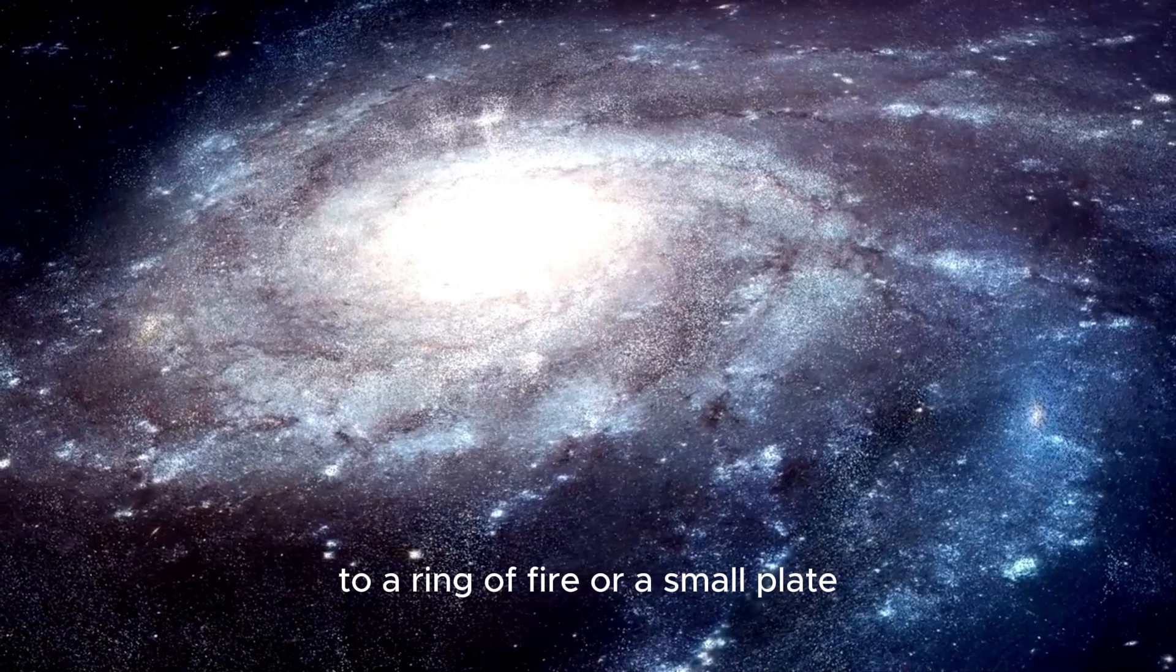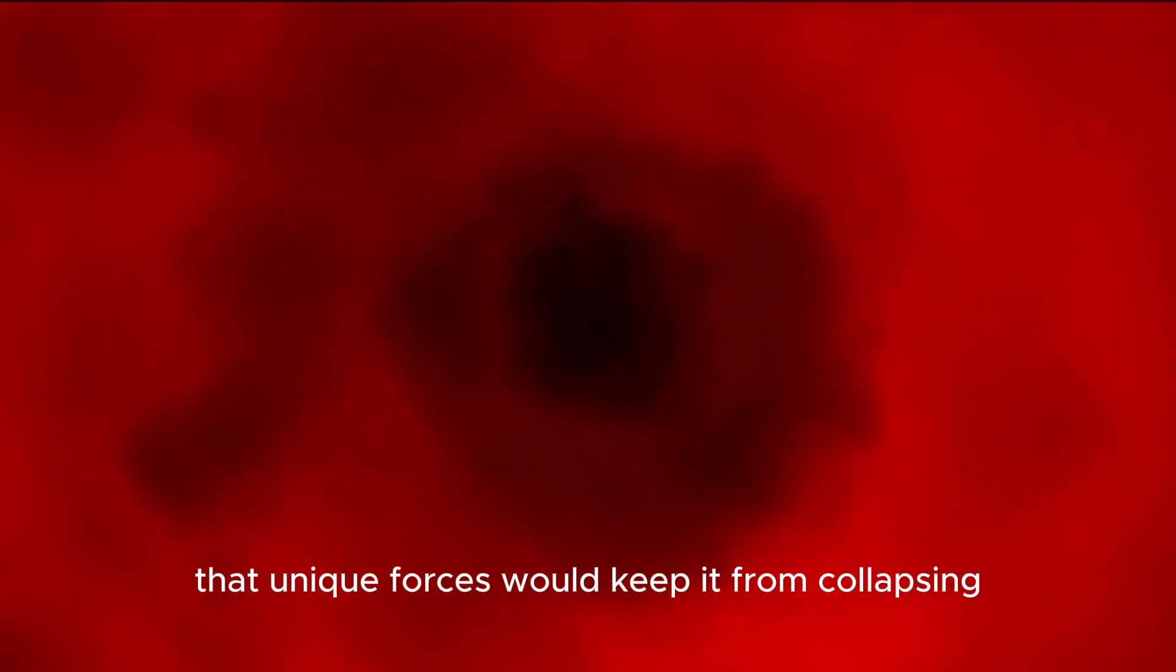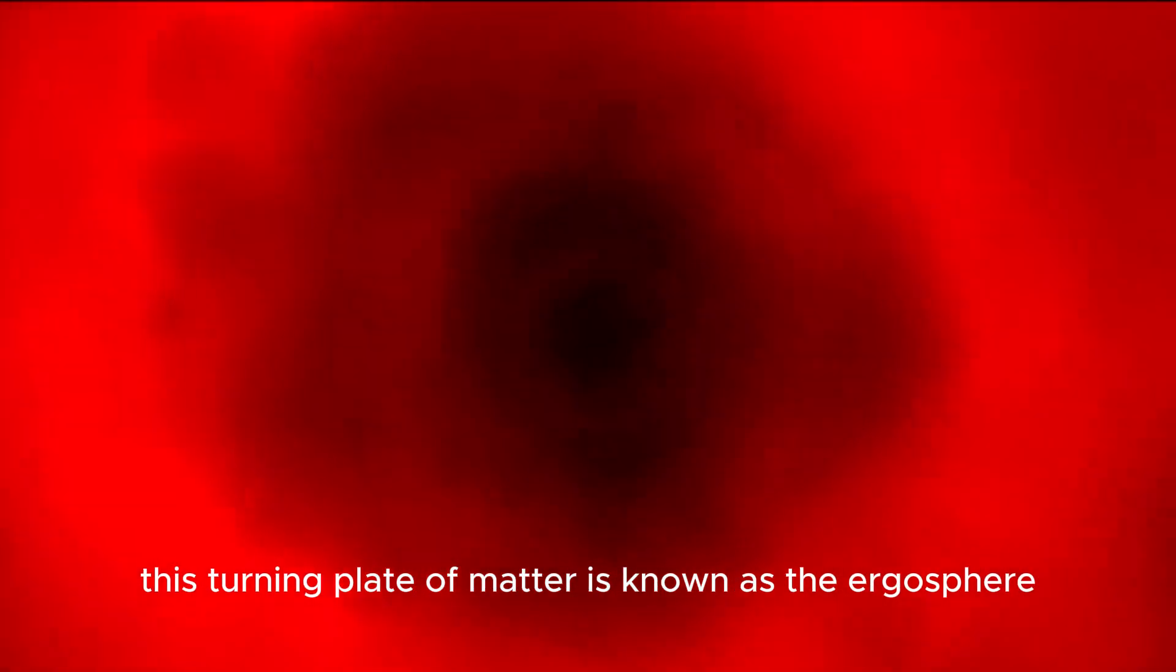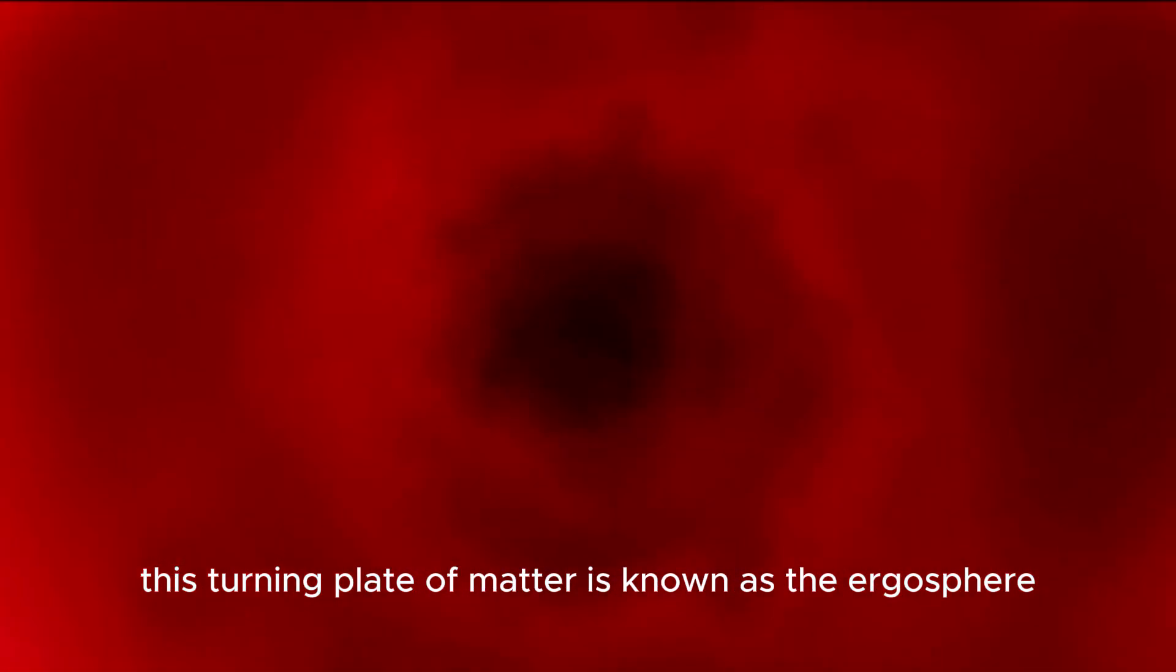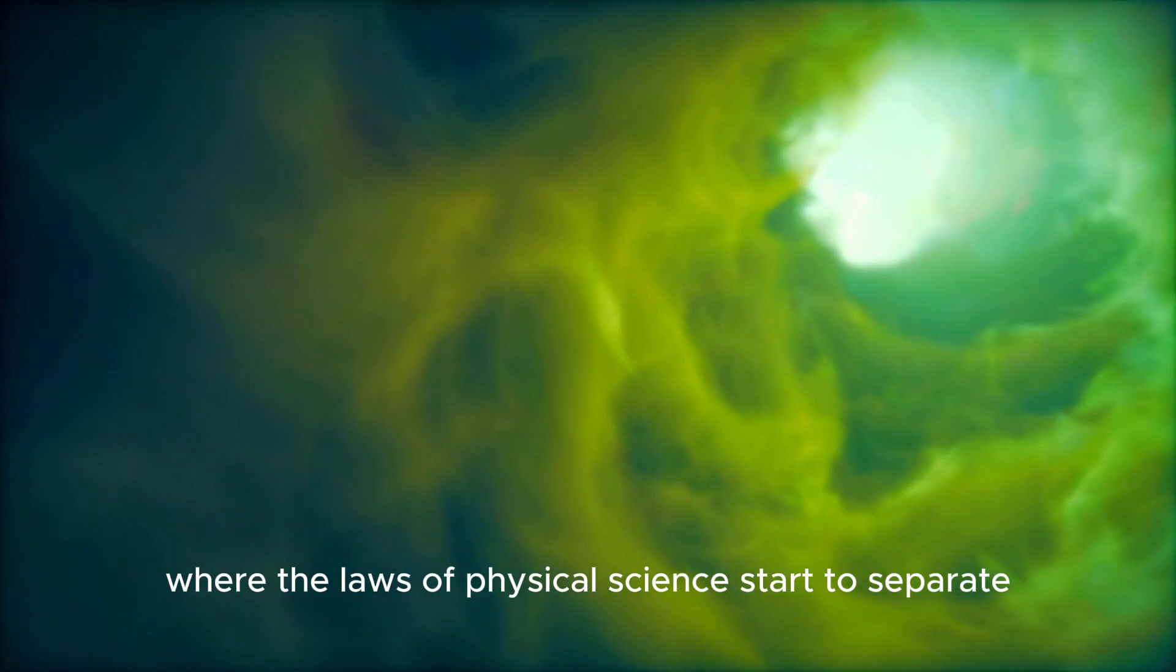Kerr showed that a turning dark opening wouldn't fall into a point as of late thought at this point to a ring of fire or a small plate. It would turn so rapidly that unique forces would keep it from collapsing. This turning plate of matter is known as the ergosphere and it is the neighborhood encompassing the dark opening where the laws of physical science start to separate.